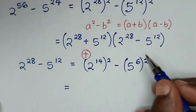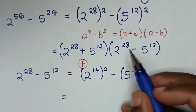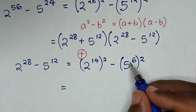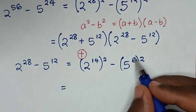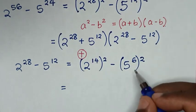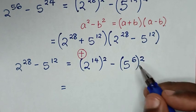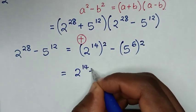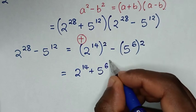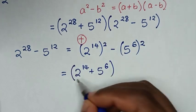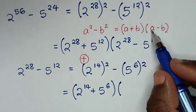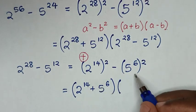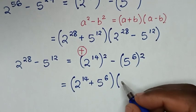Applying the difference of squares form, it will be (2 power 14 plus 5 power 6)(2 power 14 minus 5 power 6).